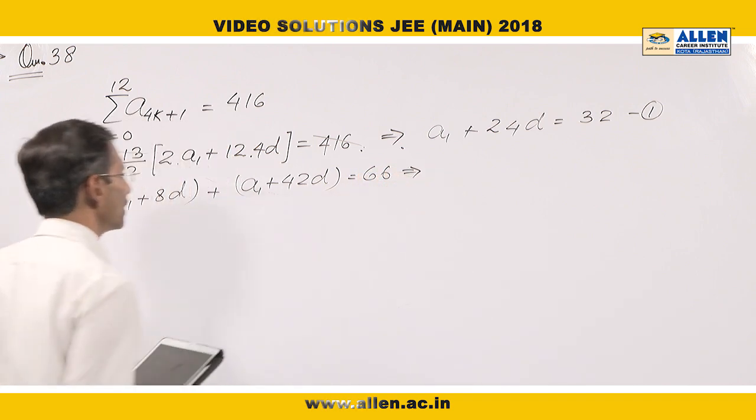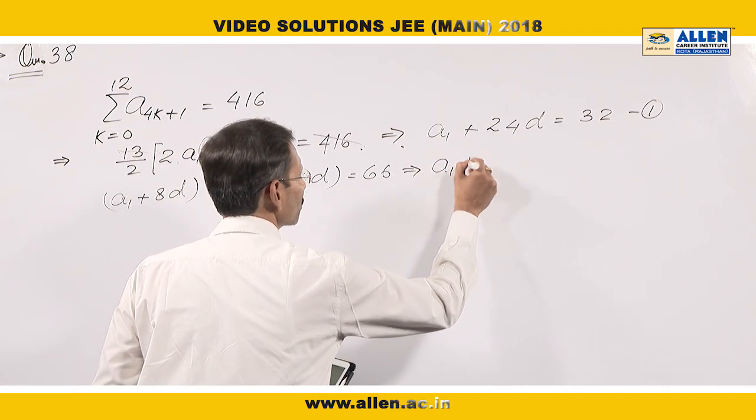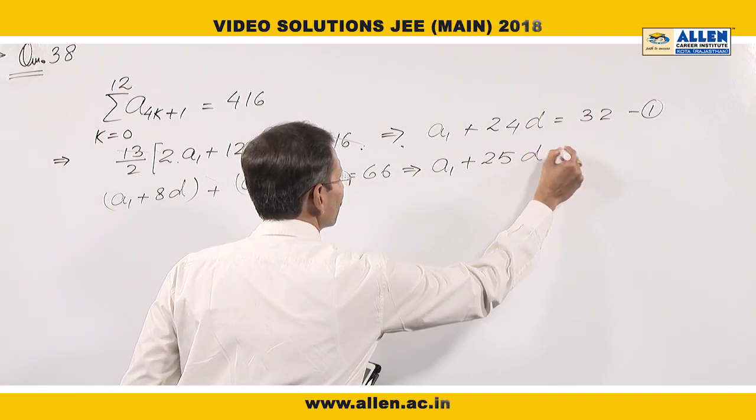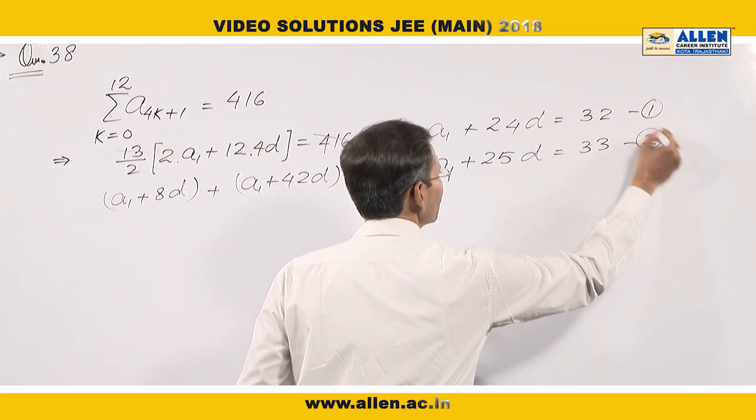This implies 2a₁ + 50d or we can say a₁ + 25d = 33. Let us say equation 2.